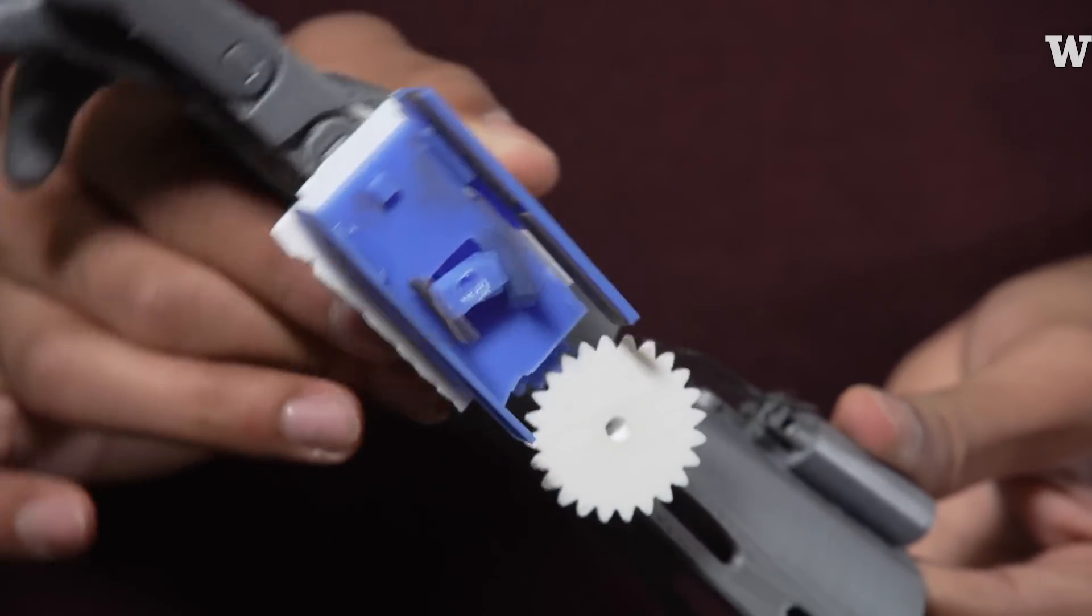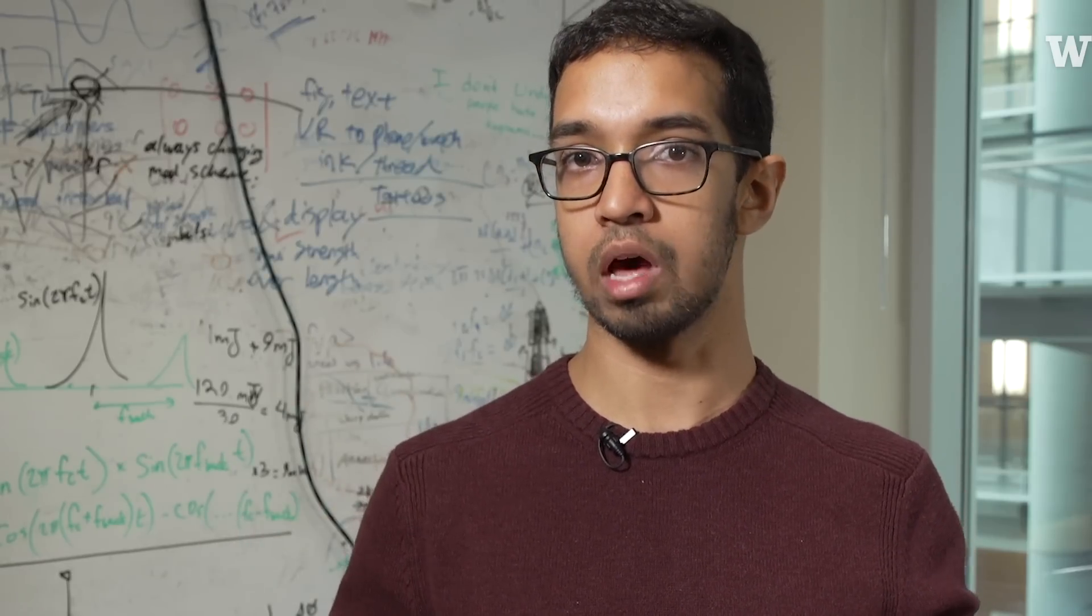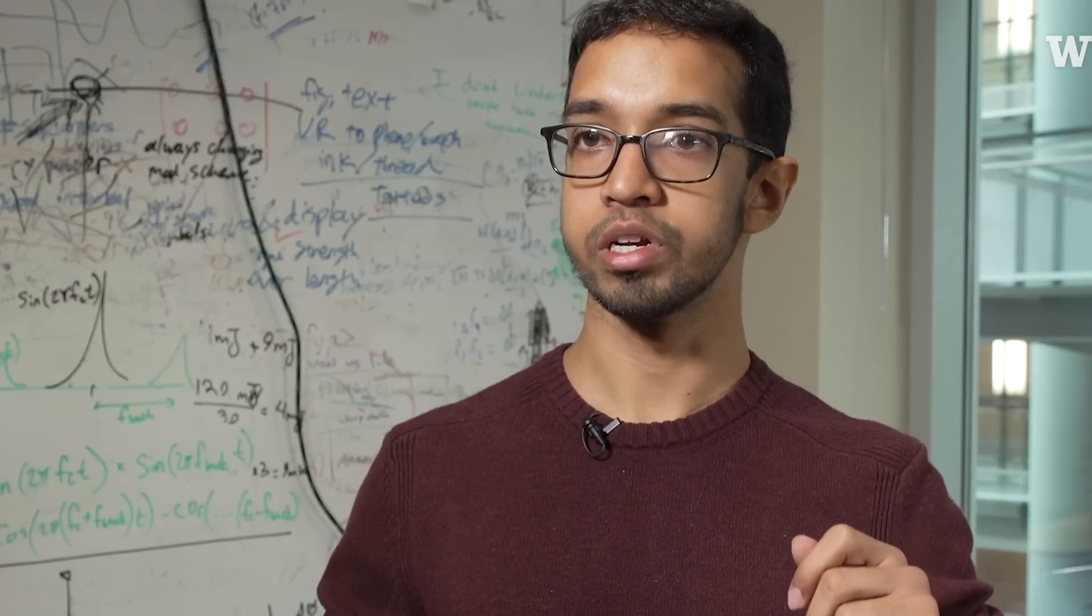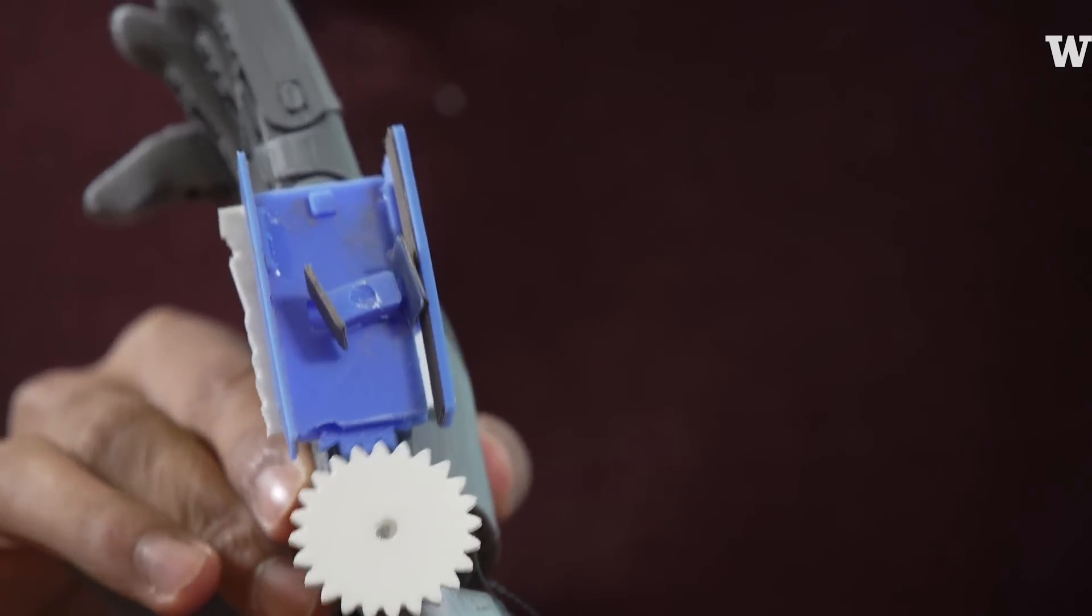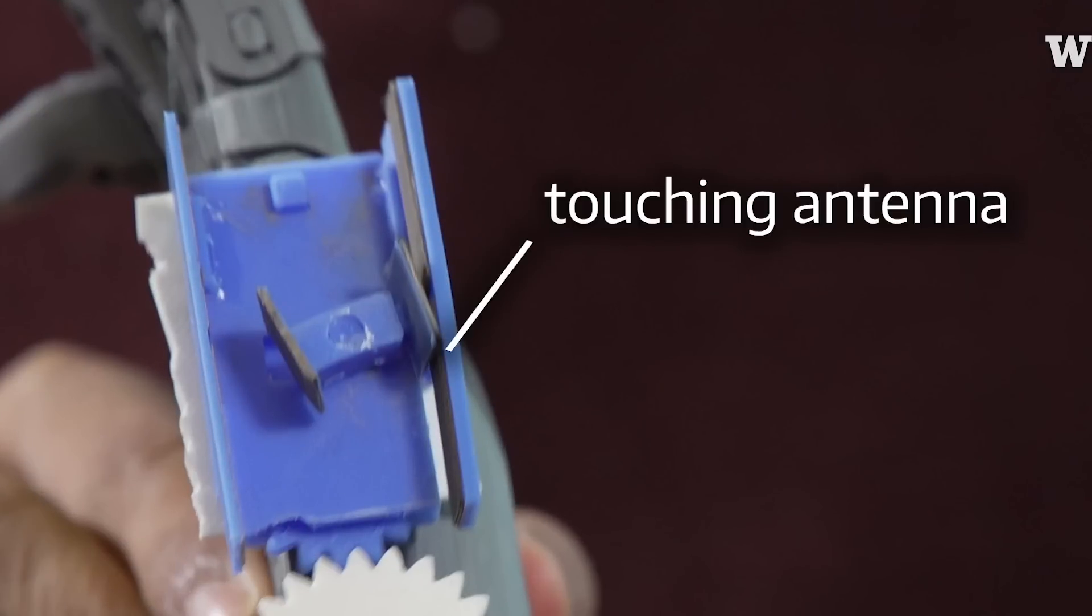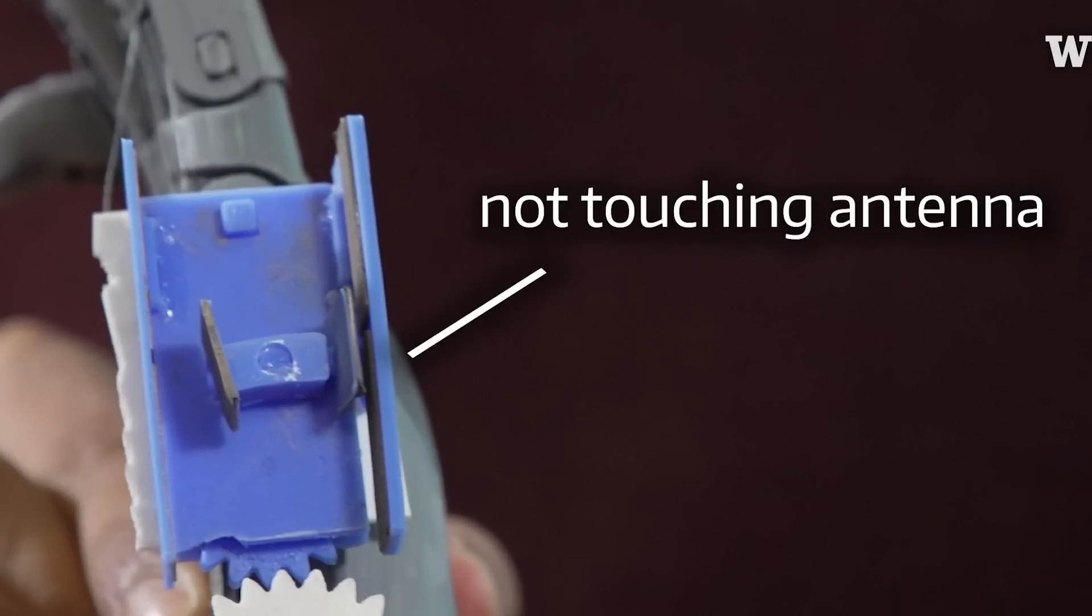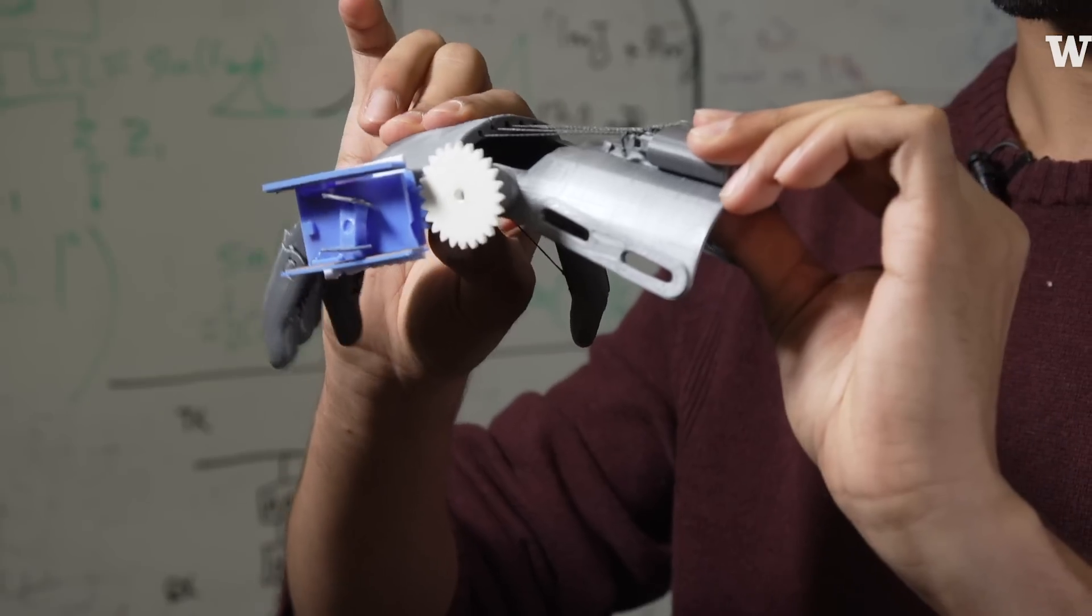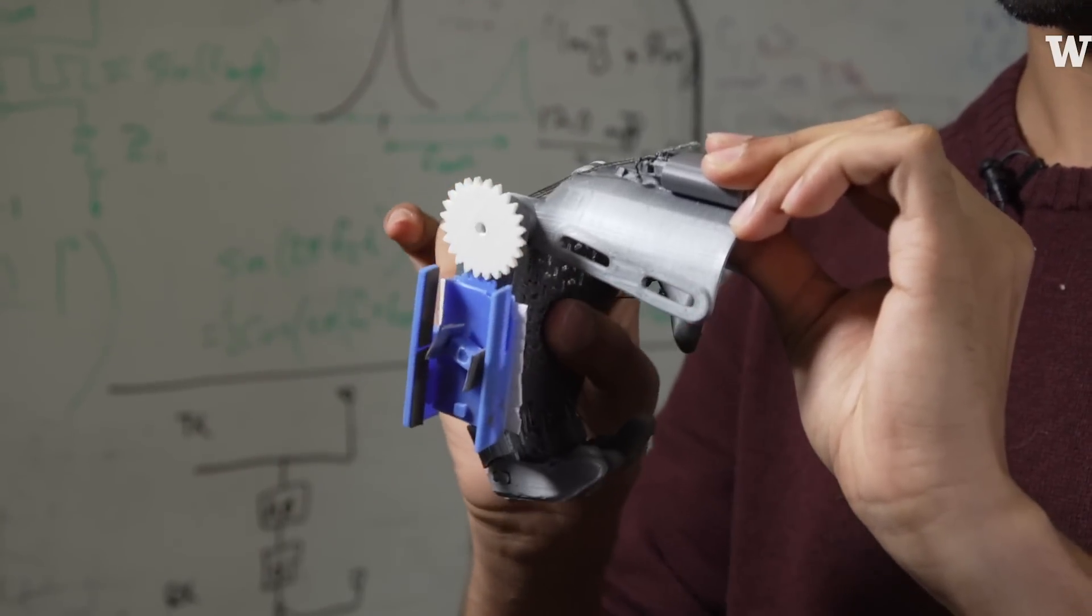The way this works is you have something like your Wi-Fi router transmitting a radio signal out into the air, and then you have our switch. As it opens and closes and basically touches the antenna or doesn't, it changes how that antenna is reflecting the signal from your Wi-Fi router. We can look at those reflections and decode a message that our 3D printed object is sending.